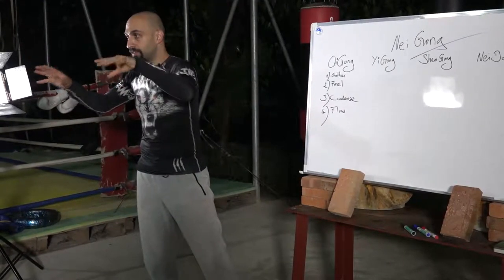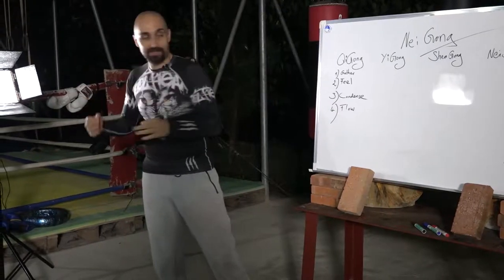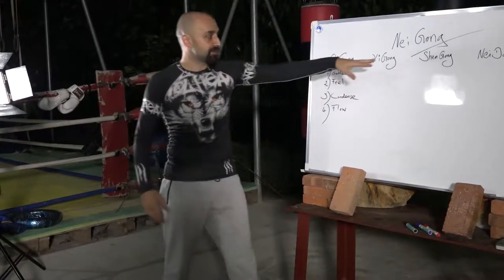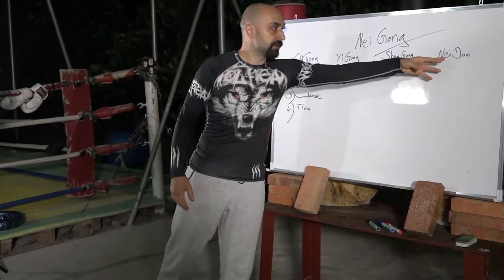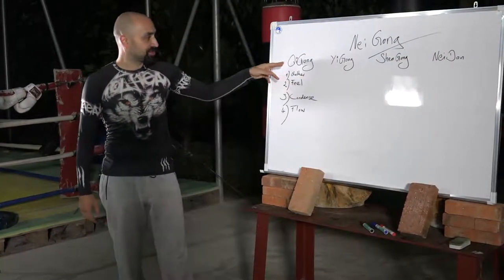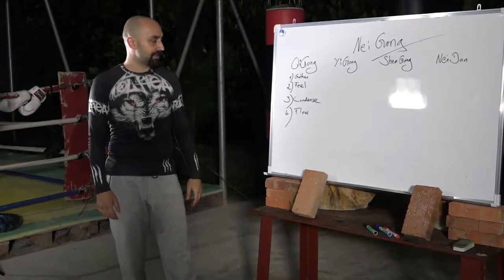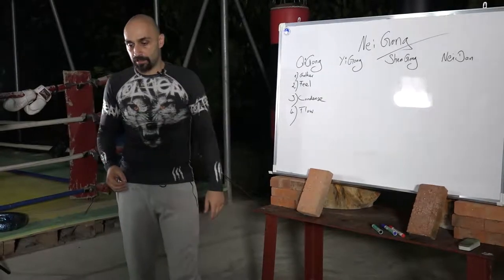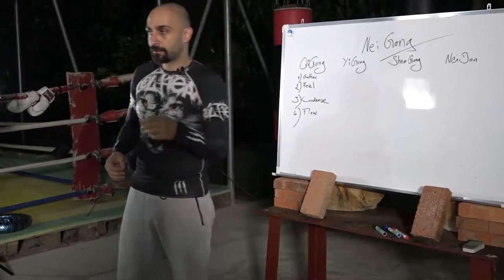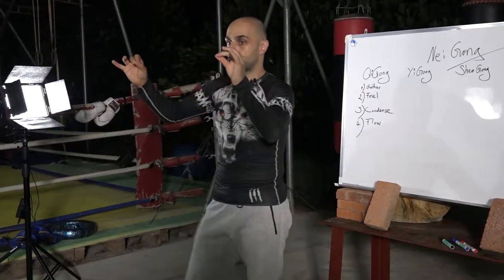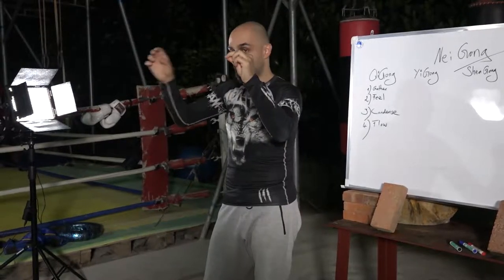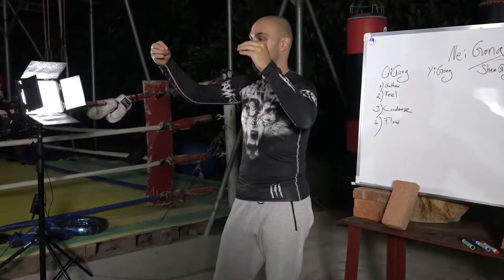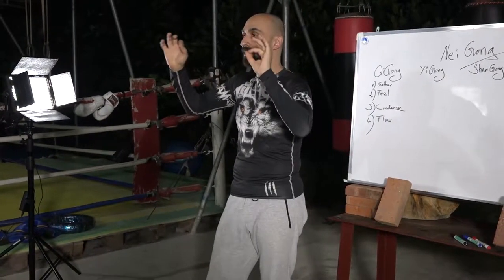To understand gathering qi, you must understand what qi is. Like Yi means mind, Shen means spirit, Neidan means inner elixir — but what is qi? Qi can basically be translated as a flow between two points. Point A, point B, and the flow in between we can call qi.